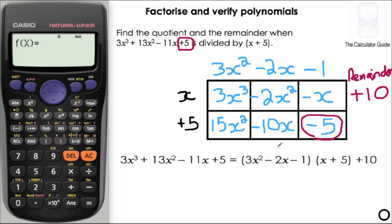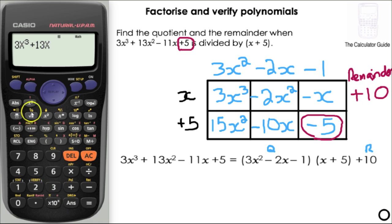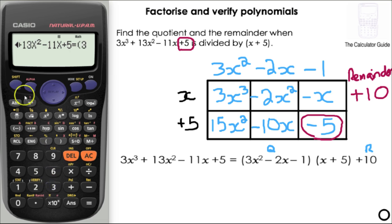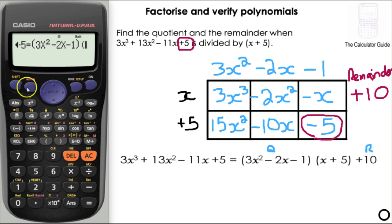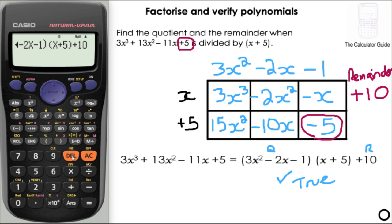If we've done this correctly, the statement should be true. We've got a quotient of 3x squared minus 2x minus 1 and a remainder of 10. I'll use the calculator's verify mode to check: inputting the original polynomial equals the factorised version with the quotient, factor, and remainder. The calculator says true. Altering one value gives false — so it's verified that what we have is correct.